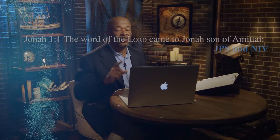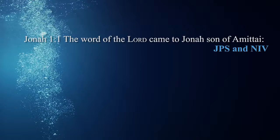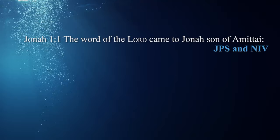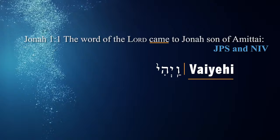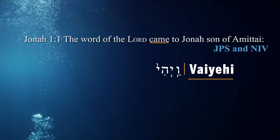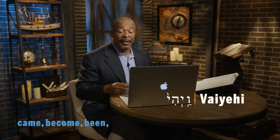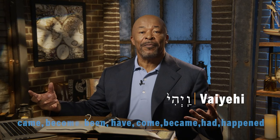Let's get started right away with Jonah chapter 1, verse 1. Here's what both translations say, word for word: 'The word of the Lord came to Jonah, son of Amittai.' In this Bible study, we love to go a little bit deeper. The first word that comes up is vayihi. This exact form occurs more than 1,000 times in the Hebrew Bible and is translated up to 40 different English words, including came, become, been, have, come, became, had, and happened, just to name a few.